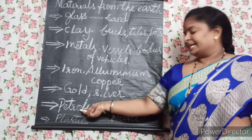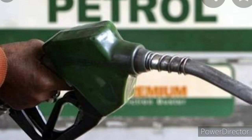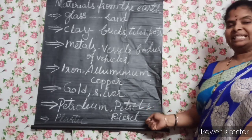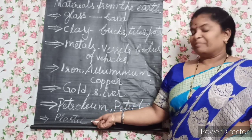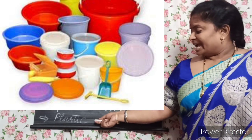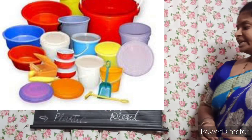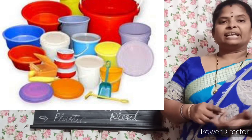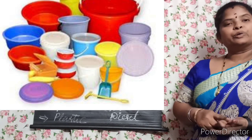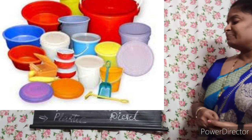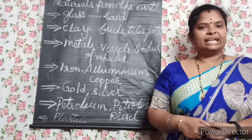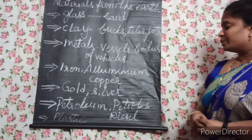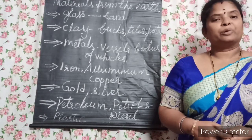Another important material we get from the earth is petroleum. From petroleum we get petrol, diesel, wax, and more. From petroleum we also make plastic. Many things are made from plastic, such as nylon clothes, toys, and ropes. However, plastic is not good because it does not rot in the earth like plant and animal matter, so it is better not to use too much plastic.